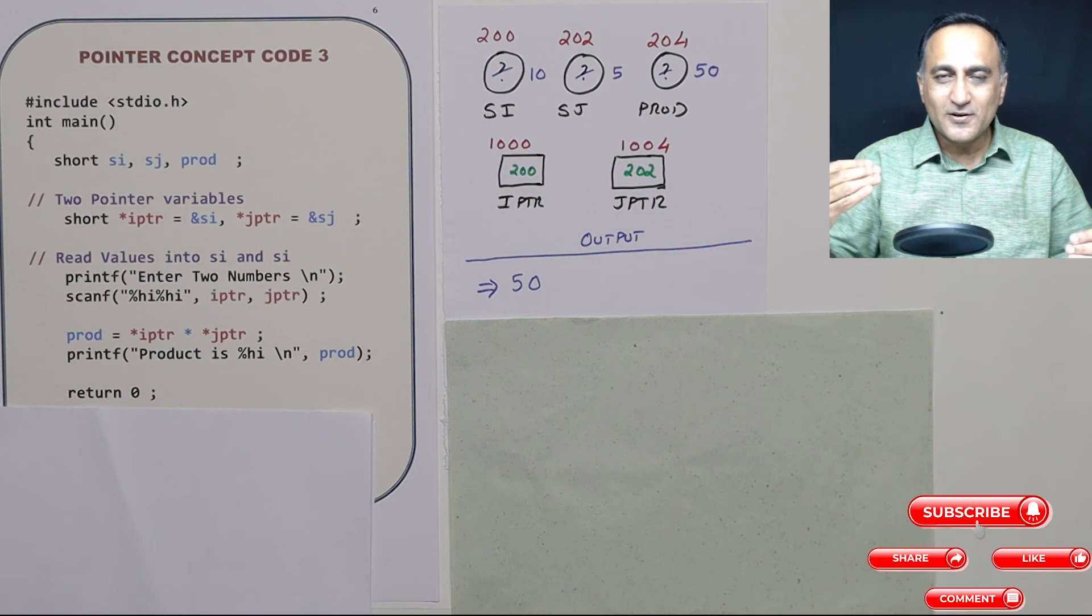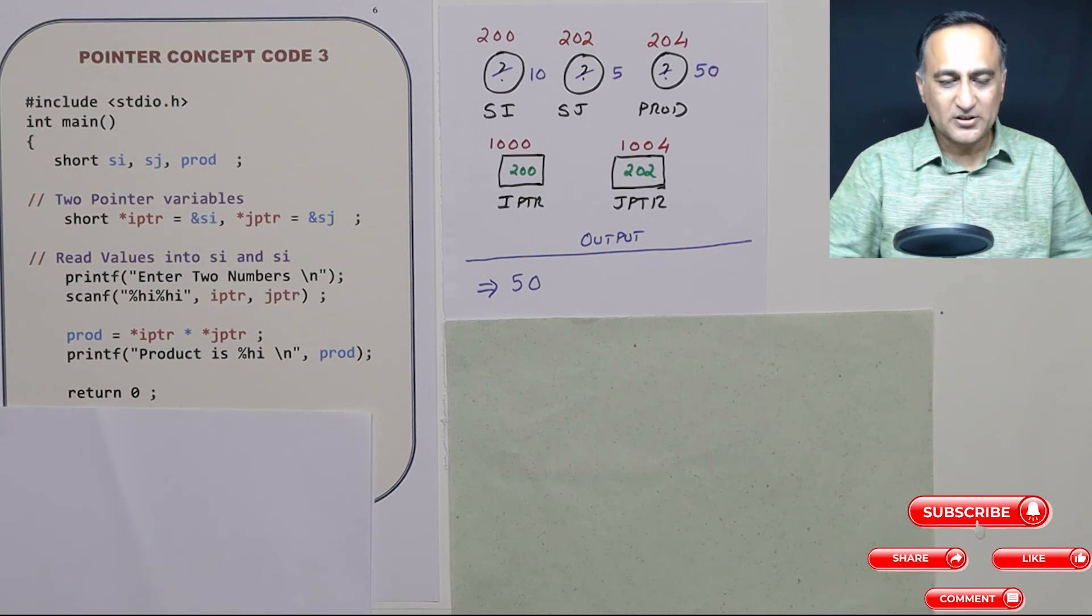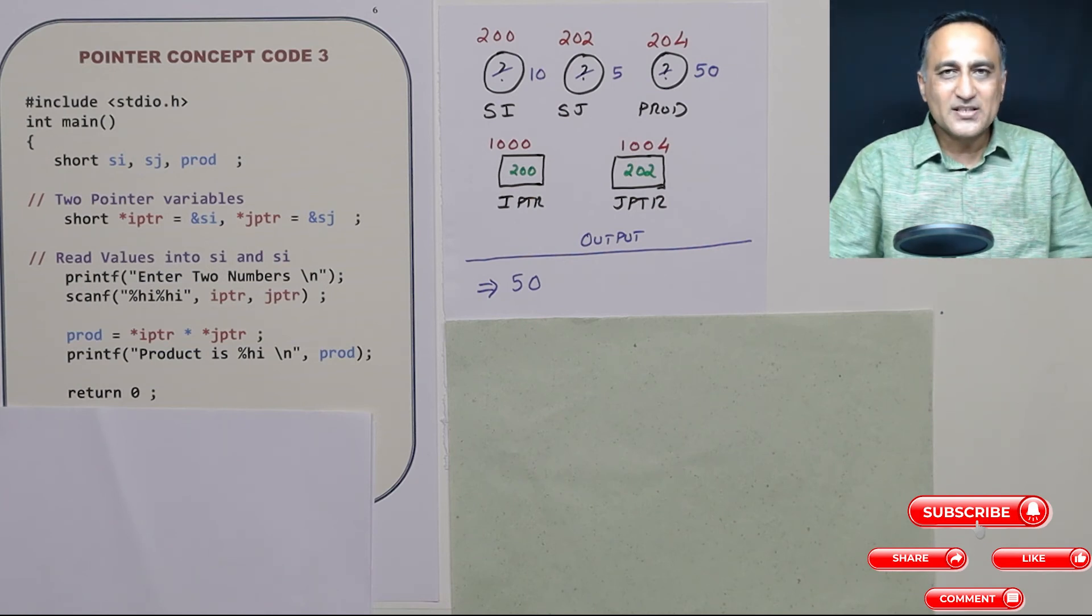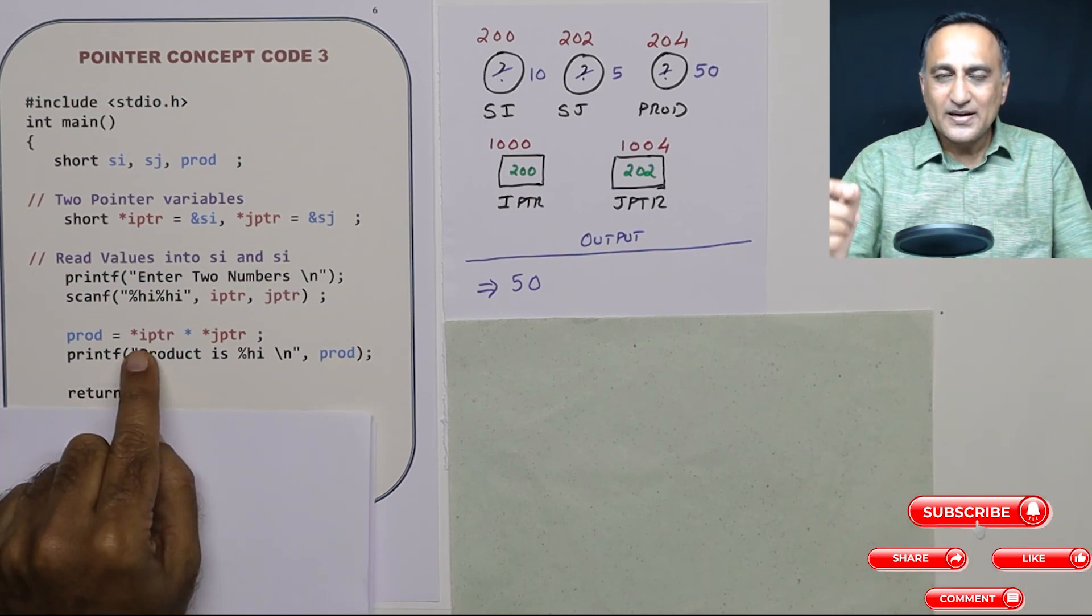So this should have given you further understanding into pointers. The whole idea you need to understand is star means content at that particular address or value at that particular address.